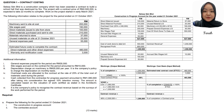Another method commonly used for contract revenue is the input method, also called the cost basis. This uses the proportion of contract costs incurred for work performed to date relative to the estimated total contract costs. To find the contract revenue using this method, first calculate the percentage of completion using the formula: cost of work done divided by estimated total contract costs, multiplied by 100%. Then, to find the contract revenue recognized, multiply the percentage of completion by the contract price to get the final value.